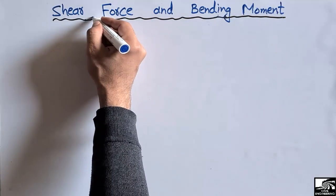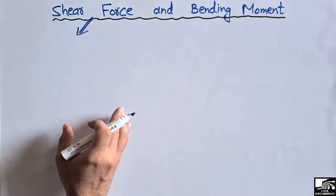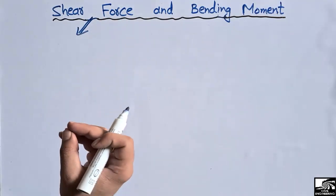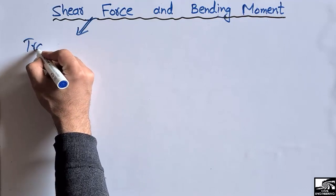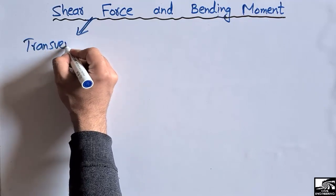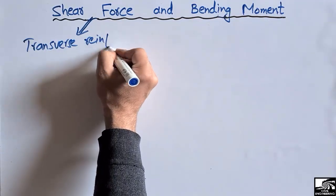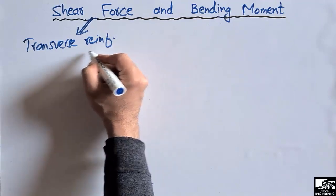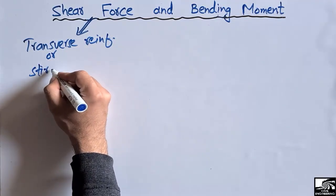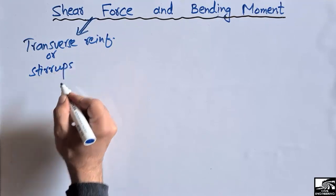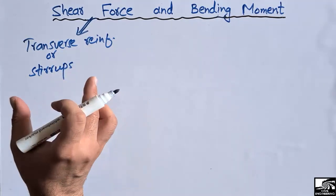The shear force diagram is used to get information about the transverse reinforcement, which we call stirrups — specifically, how much stirrups should be provided in a beam in order to resist the shear forces.